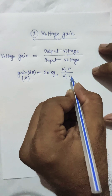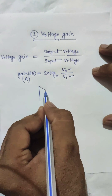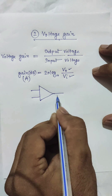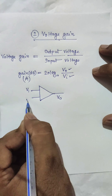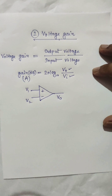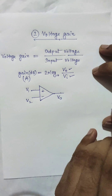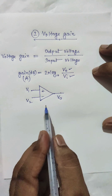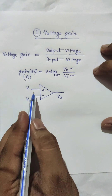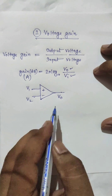An operational amplifier has two inputs and one output. The problem is which input to consider. If you say output voltage, this will be one and input voltages are two. But there is one important property: it amplifies the difference of the inputs. So for input, we have to take the difference of the inputs. Therefore, gain is related to differential gain.